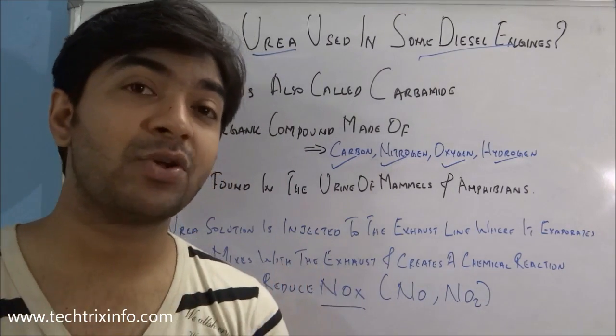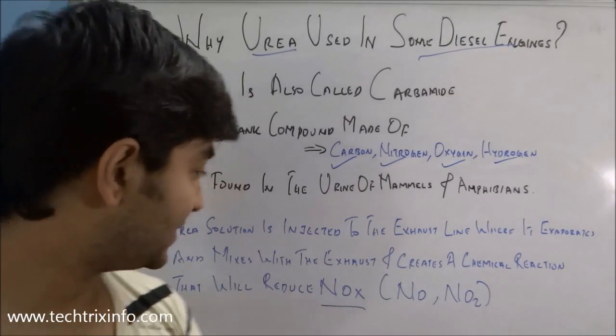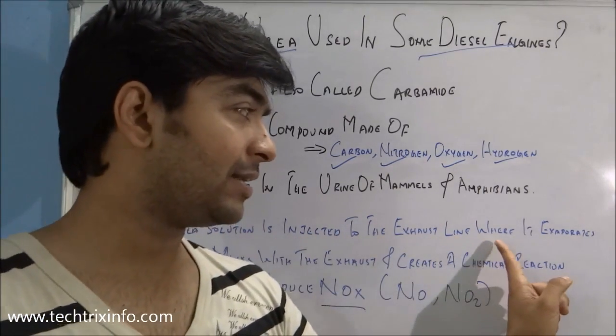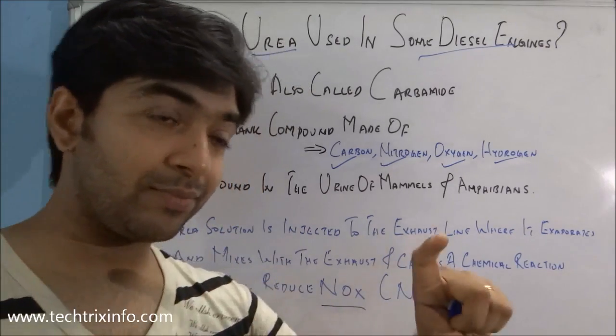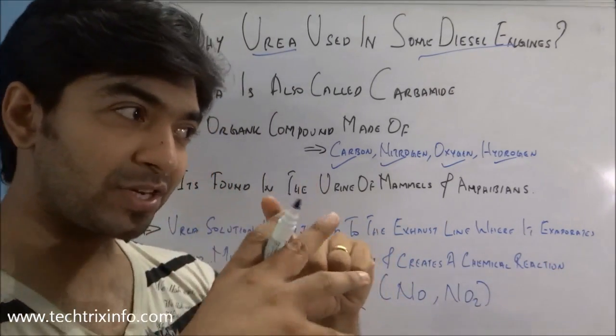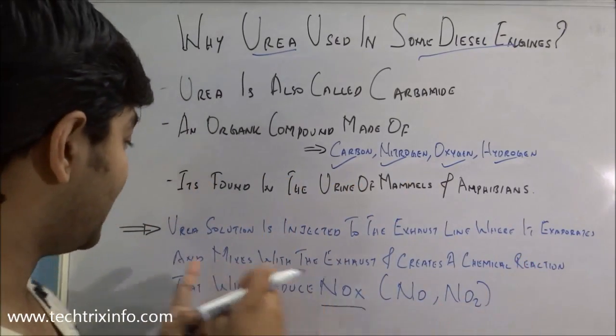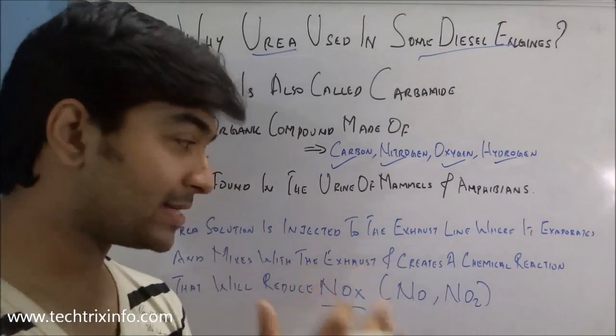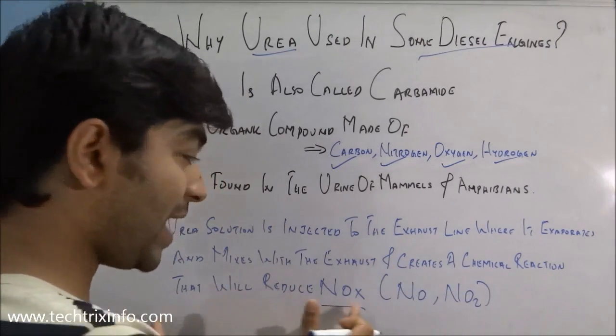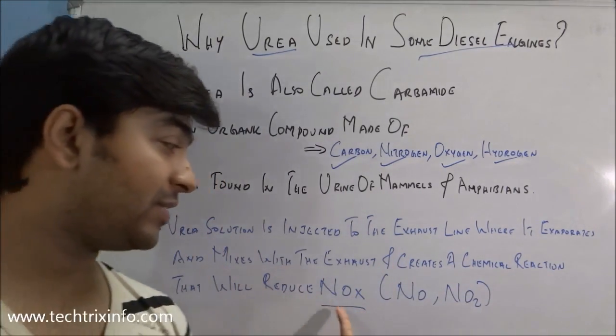What is done is that urea solution is injected to the exhaust line. The urea solution evaporates inside the exhaust stream and mixes with the exhaust which has the nitrogen oxide. It creates a chemical reaction and reduces the nitrogen and oxygen separately.